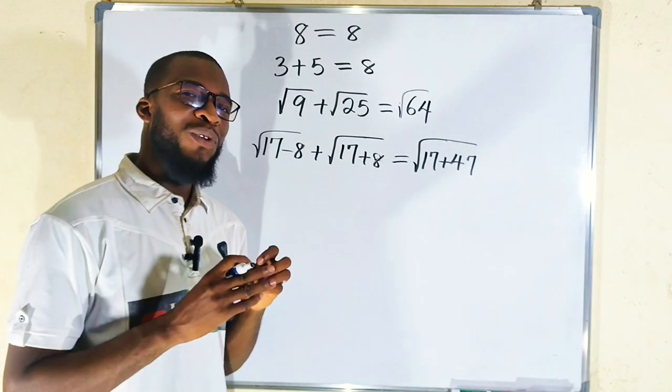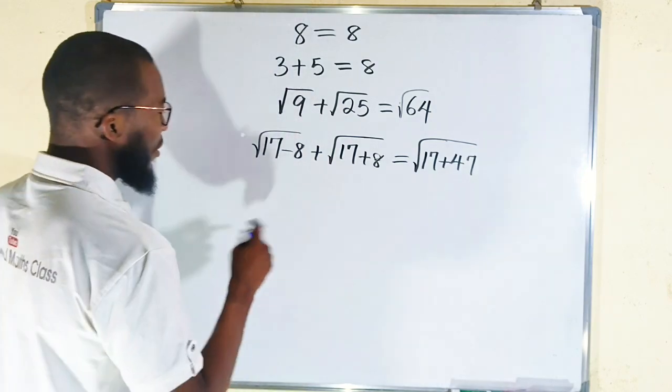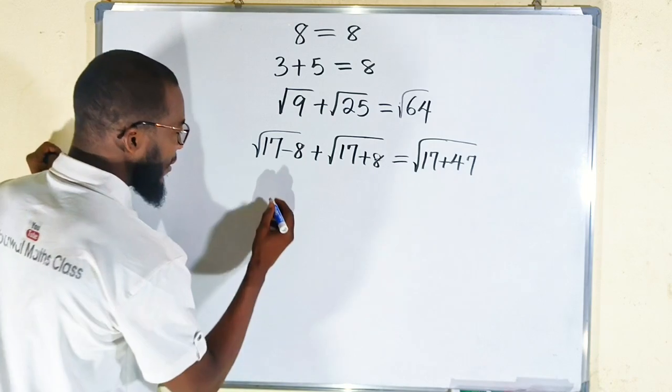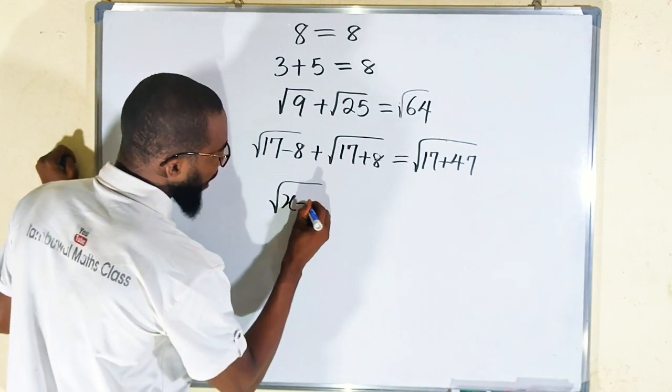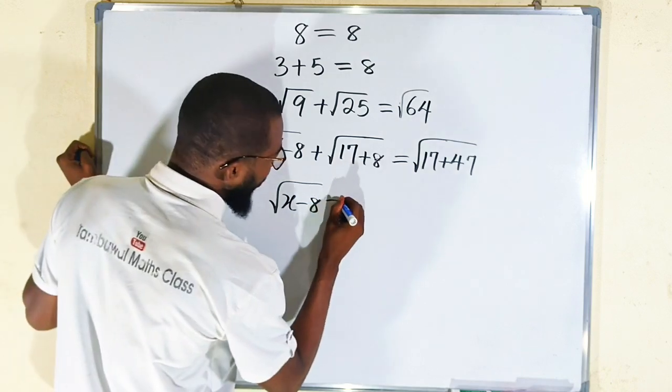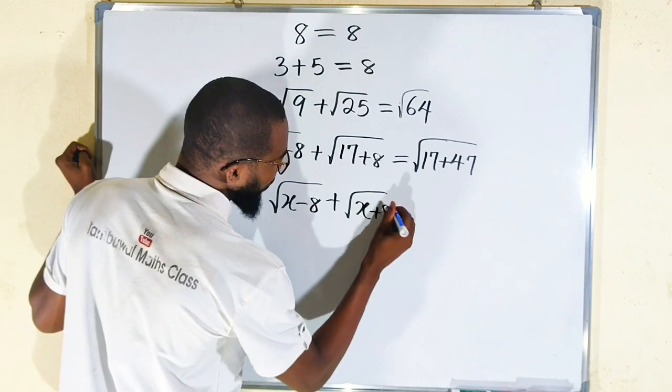So now we can confidently replace 17 with a variable. Let me use x. So this is the same thing as square root of x minus 8 plus square root of x plus 8 equals square root of x plus 47.